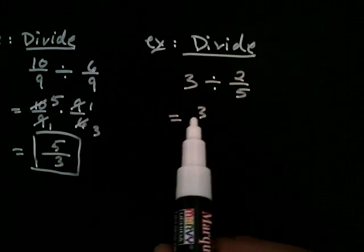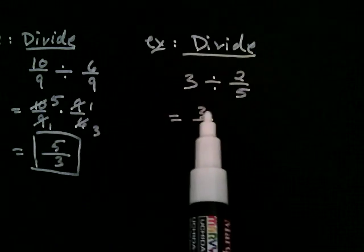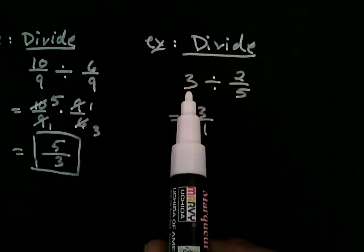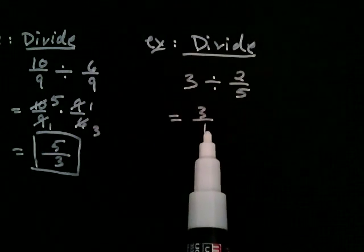So that three has been left alone. I've just written it as three over one. I haven't taken the reciprocal of it. I just put it over one, which you can always do with any number.